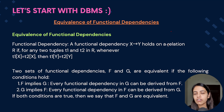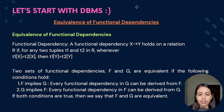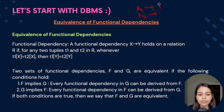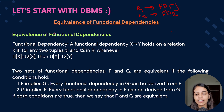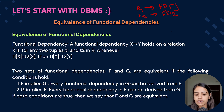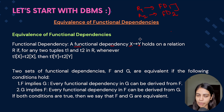Without further ado, let's get started. Consider you are given two functional dependency sets — set F and set G. Relation F has some functional dependencies, relation G also has some functional dependencies, and we have to check whether the functional dependencies of F and G are equivalent or not. For that we use the concept of equivalence of functional dependencies.